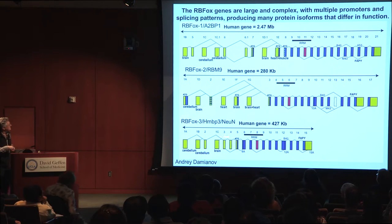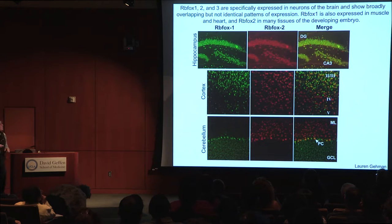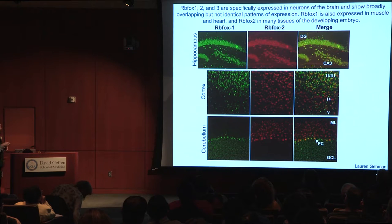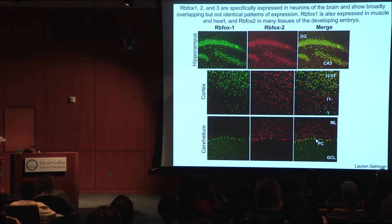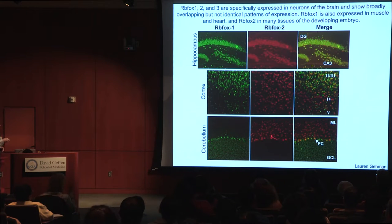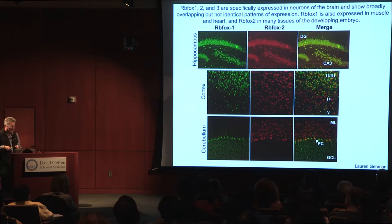These genes show complex patterns of expression. In the brain, most neurons express all three paralogs, but there are differences. For example, layer 4 of the cortex makes FOX2 but less FOX1. The really striking differences are in the cerebellum: granule cells and Purkinje cells make FOX1, whereas FOX2 is absent from granule cells but present in molecular layer cells and also in Purkinje cells. So there are very complex patterns of regulation in different neuronal subtypes.